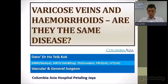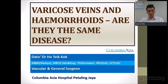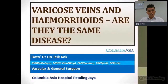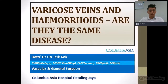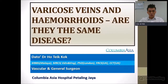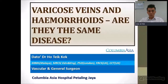Dato has worked and trained in the UK for over 15 years. His practice in vascular surgery ranges from spider veins, varicose veins, diabetic foot ulcers, and major surgery for aortic aneurysms. His practice in general surgery includes treatments of gallstones, appendix, hernias, breast lumps, thyroid disease, laser hemorrhoid surgery, laparoscopic surgery, and endoscopy. Without any further delay, I would like to call upon Dato Ho, consultant general and vascular surgeon at Columbia Asia Hospital, Petaling Jaya, to start his talk.